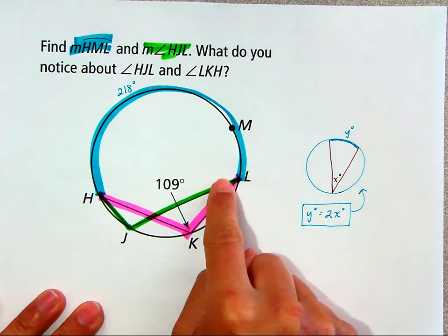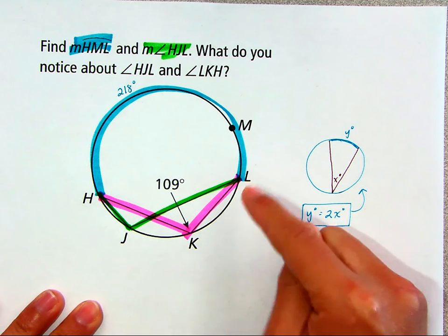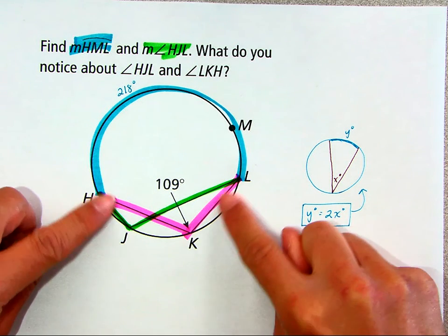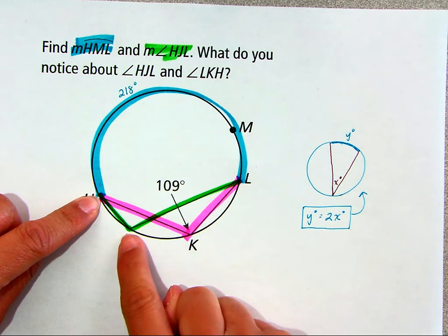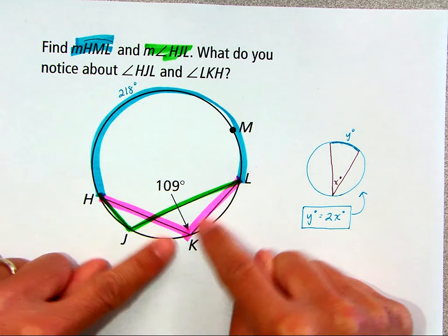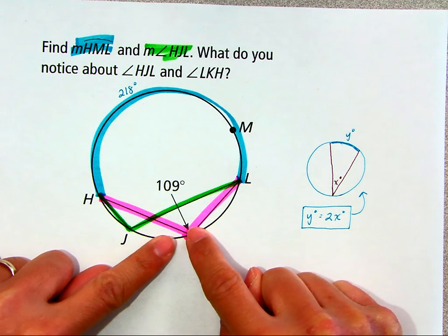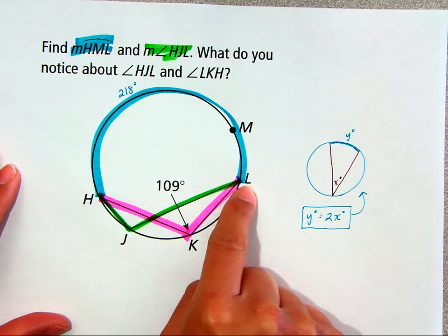But you'll notice that that angle is associated with the exact same arc, right? Because these cords here have the same endpoints. H and L are endpoints of the green angle, and H and L are endpoints of this pink colored angle. And so they have the same arc that subtends them.